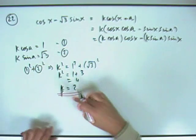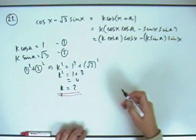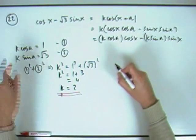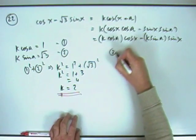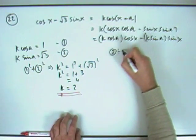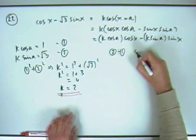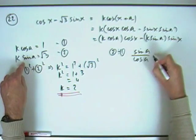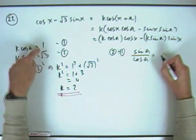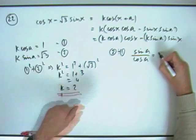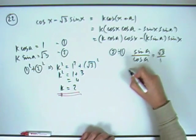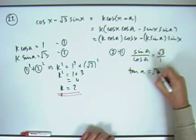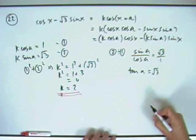That's one of the answers we're looking for — just looking for k and so on. And then to get rid of the k's, divide them. Do two divided by one. That way you've got sin a over cos a for that side equals root three over one for that side. And of course that makes tan a, so the tan of a was root three.